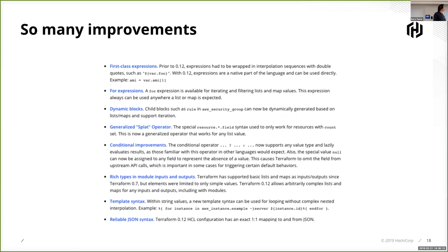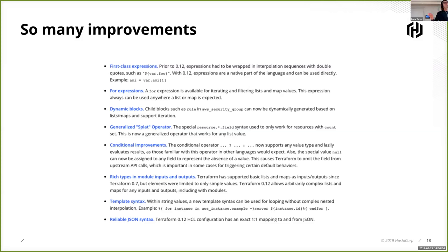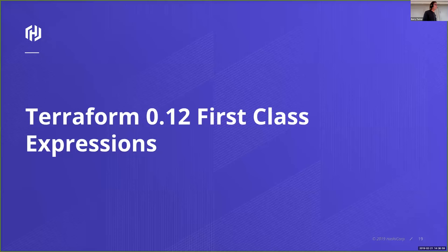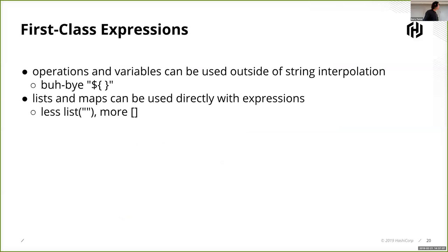Merging HCL and HIL has given us the capabilities to deliver the features you've been asking for - things like more robust types and language-level features that mean we can avoid those nasty hacks. There are a huge number of improvements from 12 months of work: first class expressions, no more string interpolation, the ability to use for expressions for map and list transformation, dynamic blocks, a generalized splat operator, updates to the conditional operator, improved types, templating syntax, and better JSON integration with a tighter mapping between HCL2 and JSON.